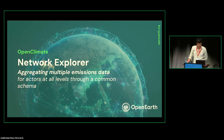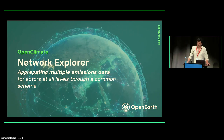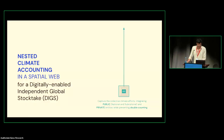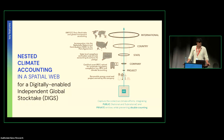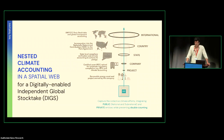The second issue is there's no linkage between actions being done at the state level — countries and subnational states or non-state actors. Third, there are no clear incentives for these non-state actors to do accounting or have accountability. Based on these three levels, we built the Open Climate Network Explorer, which aggregates multiple emissions data for actors at all levels through a common schema to get a planetary vision of how reported emissions track progress toward the Paris Agreement.